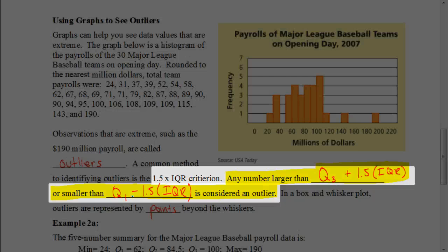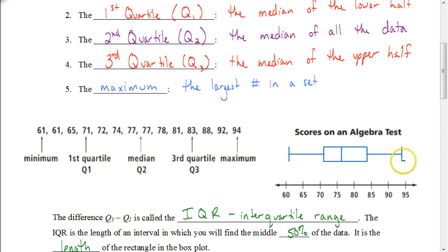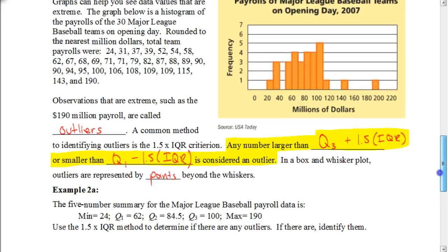In a box plot, or box and whisker plot, outliers are represented by points beyond the whiskers. The whiskers represent the maximum and minimum values, and any outliers would be shown as points wherever they fall on the number line beyond those whisker endpoints.